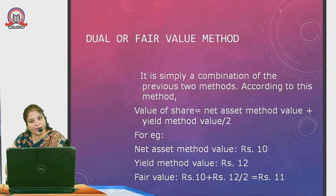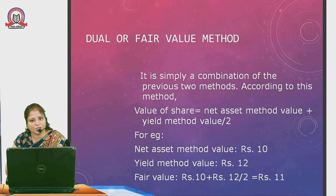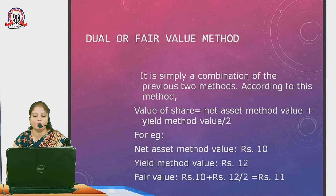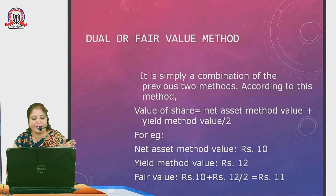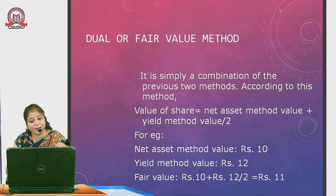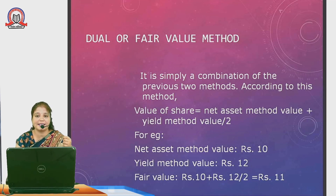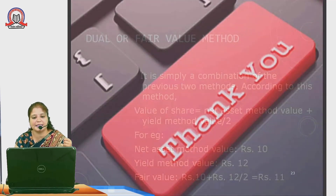The last method in the valuation of shares is the fair value method, also called the dual method. It is a combination of both the net asset method and the yield method — we take the average of both values. Fair Value = (Net Asset Method Value + Yield Method Value) ÷ 2. For example, if the net asset method gives rupees 10 per share and yield method gives rupees 12 per share, the fair value = (10 + 12) ÷ 2 = rupees 11.